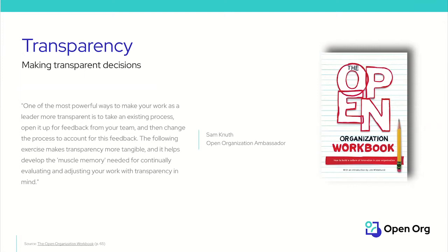This exercise includes four phases: you pick a process; you gather feedback, which includes revising and iterating; you implement; and last but not least, reflection after some time has passed — how did it go? Is it more transparent? Is it more effective? Do you need to change or improve something? This exercise and many more are available in the workbook.